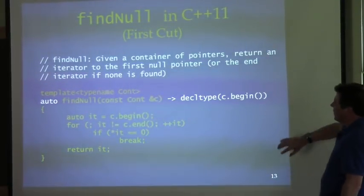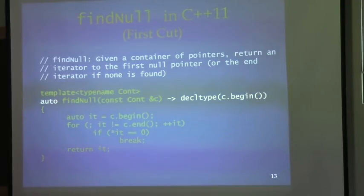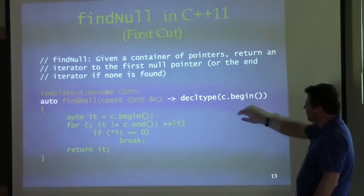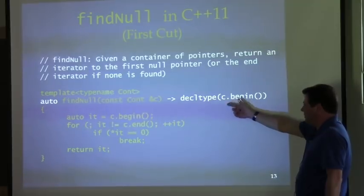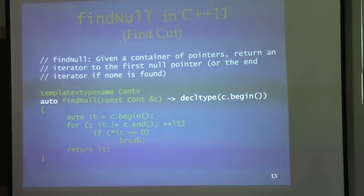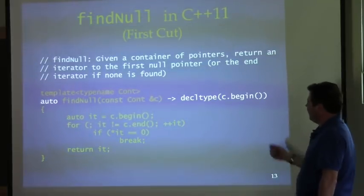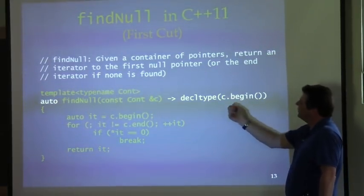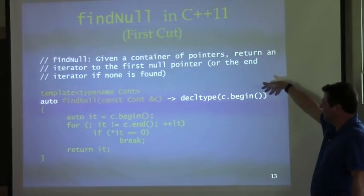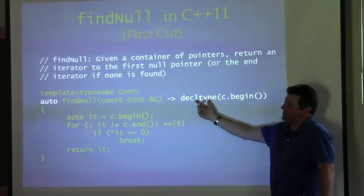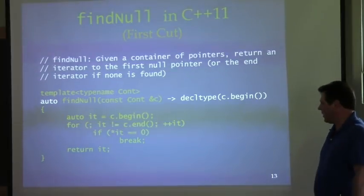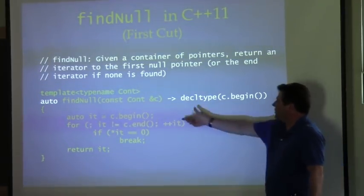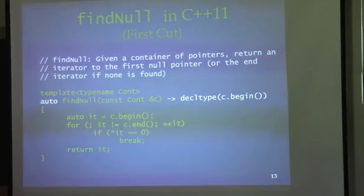Let's morph the findNull function template into C++11. First we'll use the trailing return type — I can pick anything that gives me an iterator, so I just happened to pick decltype(c.begin()). We don't have to worry about this having the overhead of calling the function because this is just determining type — analogous to sizeof. It's all a compile-time operation with no runtime cost. So whatever c.begin() returns, that's what findNull returns. That's just applying the trailing return type.